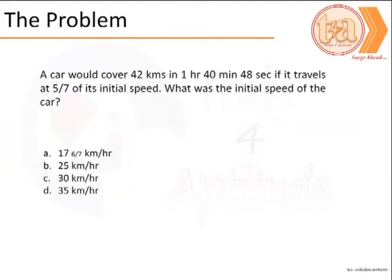Let us begin by reading the problem. A car would cover 42 km in 1 hour, 40 minutes and 48 seconds if it travels at 5/7 of its initial speed.